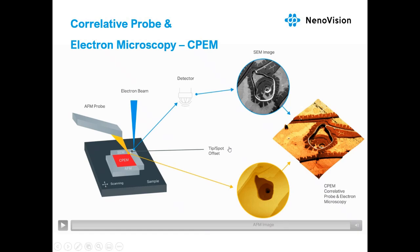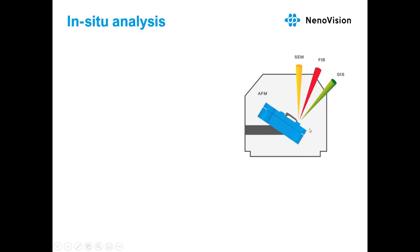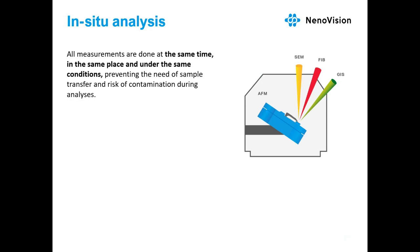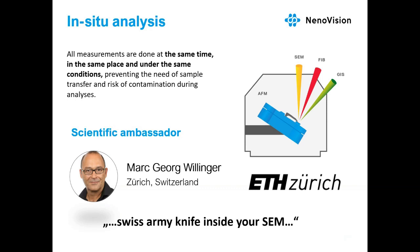This technology is unique to LightScope and was developed for seamless data correlation. Since we integrate AFM inside the SEM chamber, all measurements are done at the same time, in the same place, and under the same conditions. Sensitive samples are not contaminated by air due to no transfer between chambers. Our ambassador for in-situ analysis, Mark Willinger from ETH Zürich, described LightScope as 'a Swiss army knife inside your SEM.'